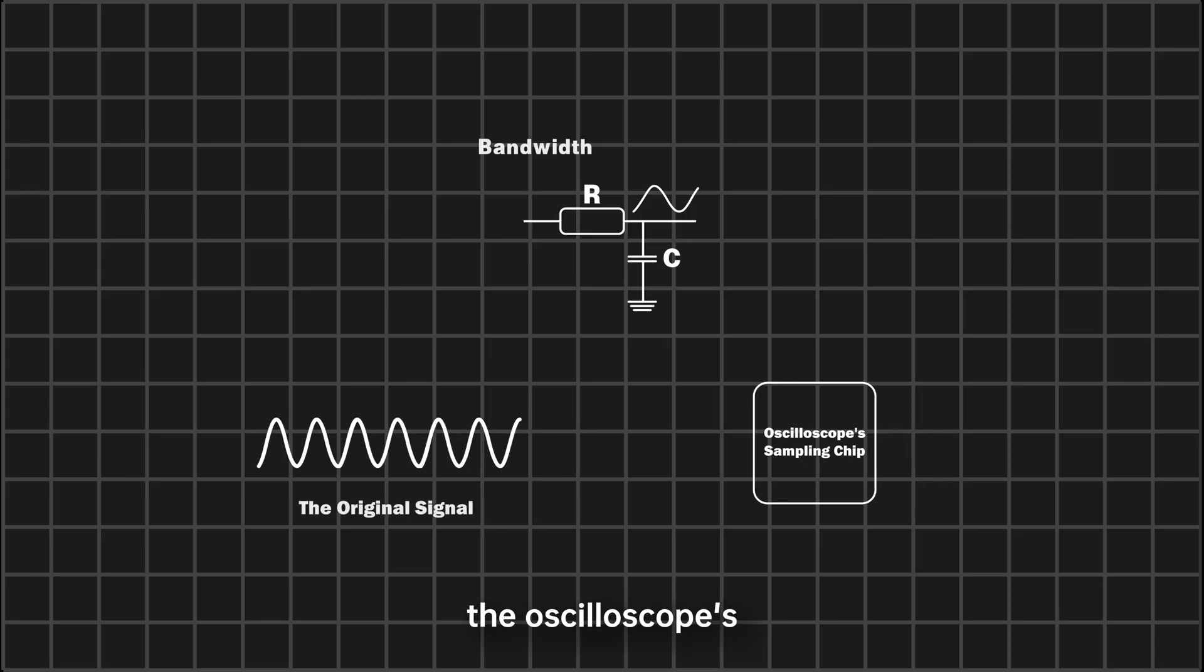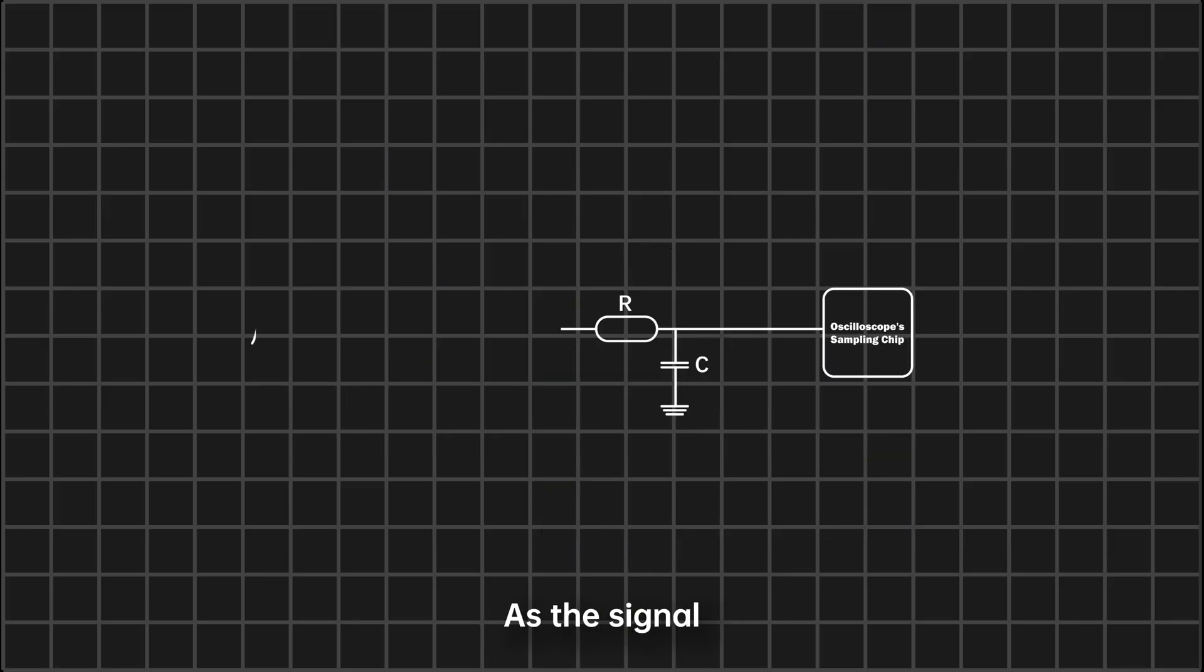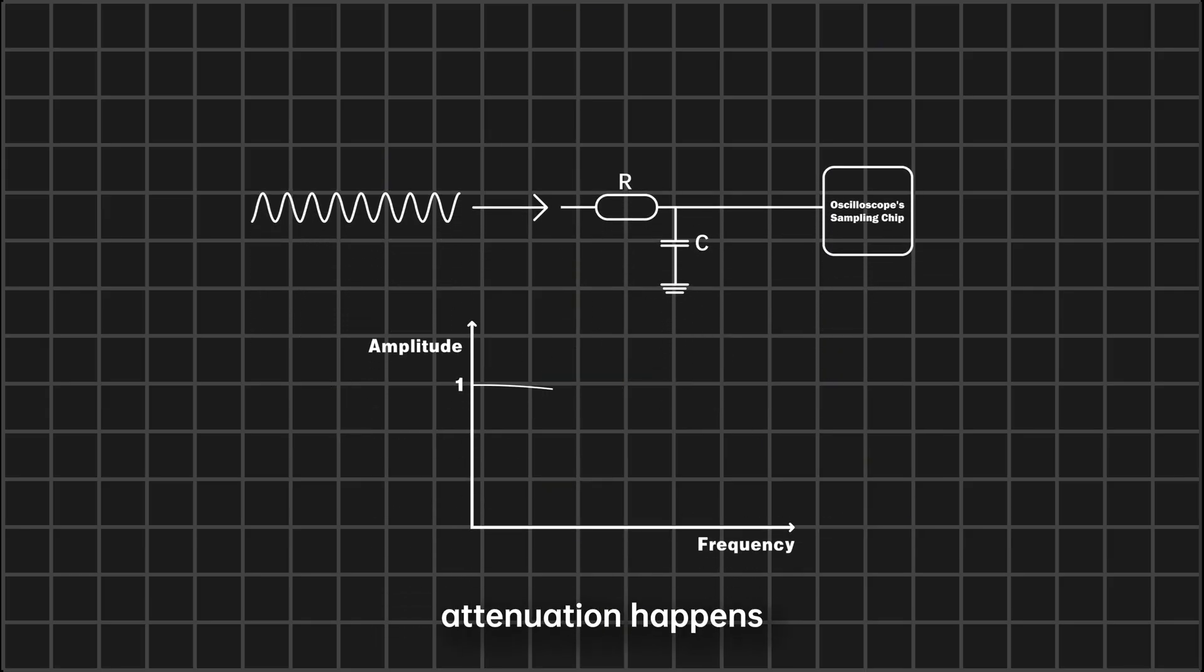Here's our original signal, and here's the oscilloscope's sampling chip. Between them are the probe and internal circuits, which act like a low-pass filter. As the signal passes through, attenuation happens.